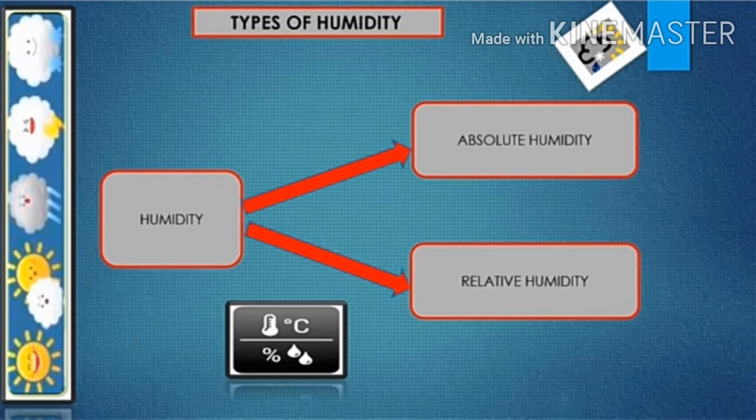Generally, humidity is divided into two types: Absolute Humidity and Relative Humidity. These are just ways of representing the moisture contained in the air. Let us see them one by one.